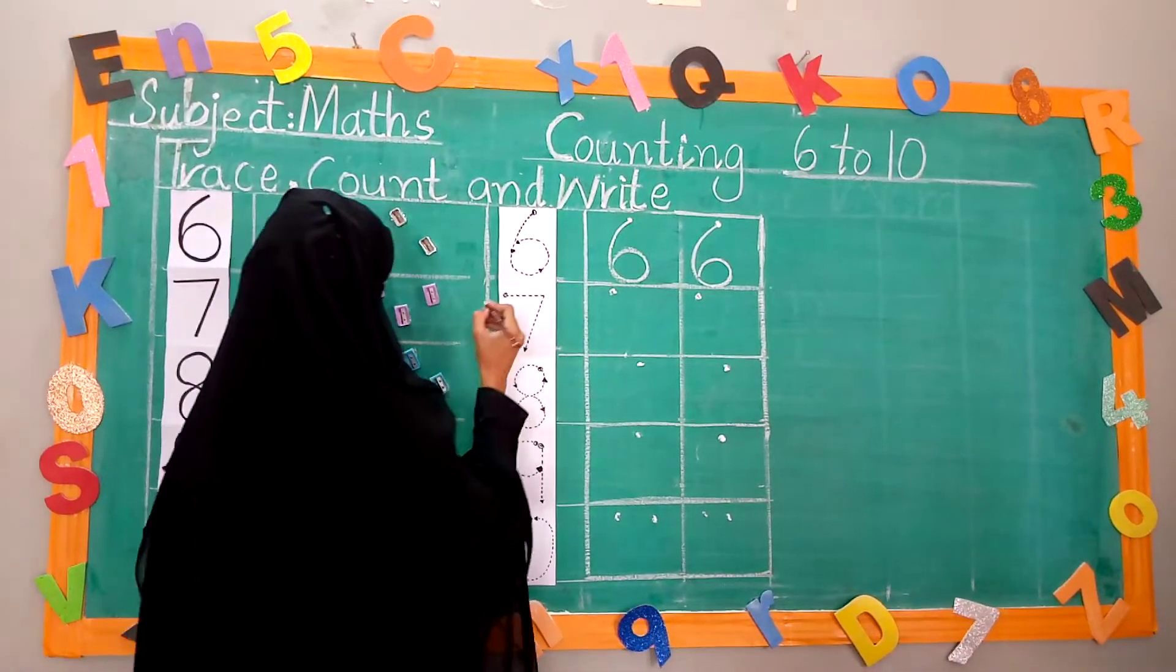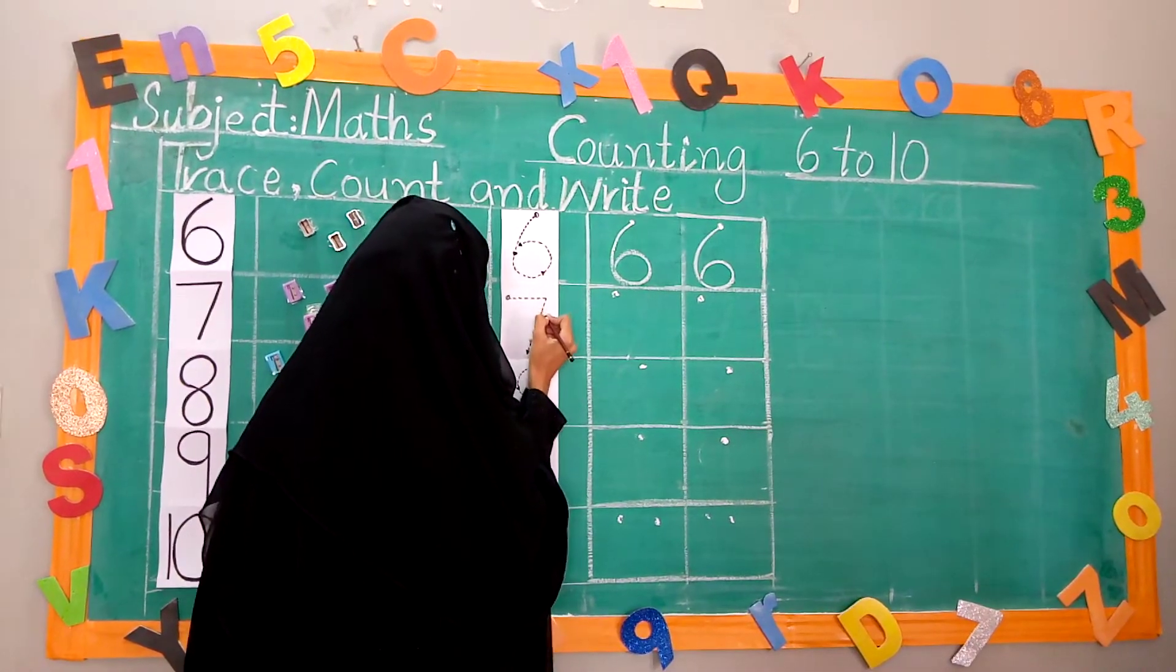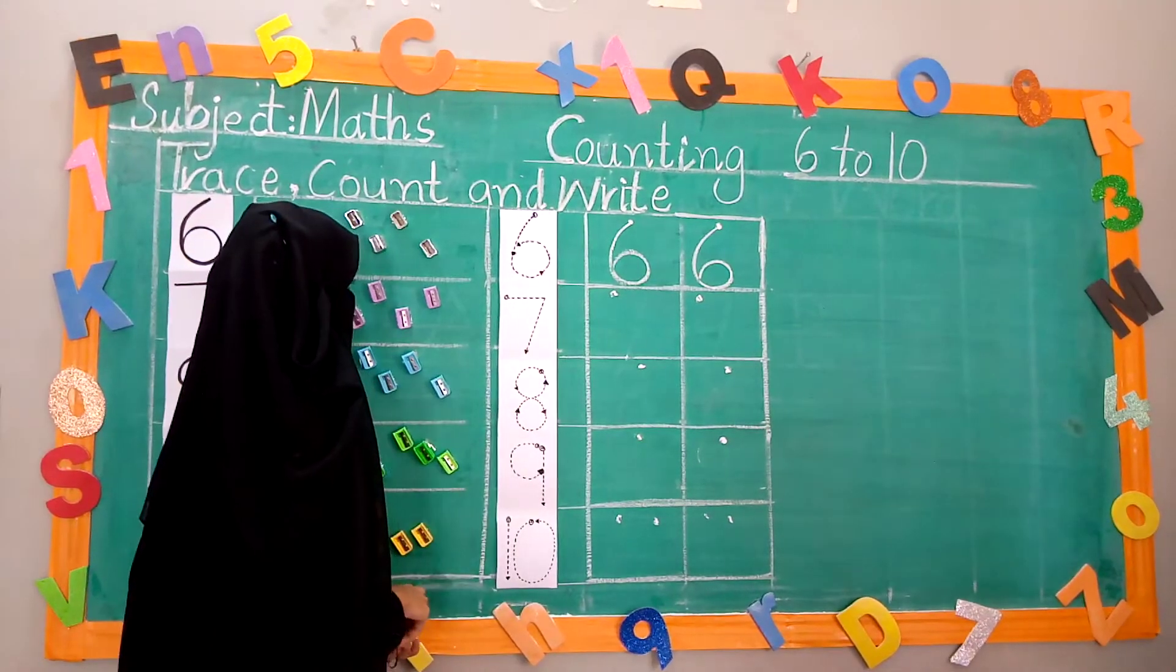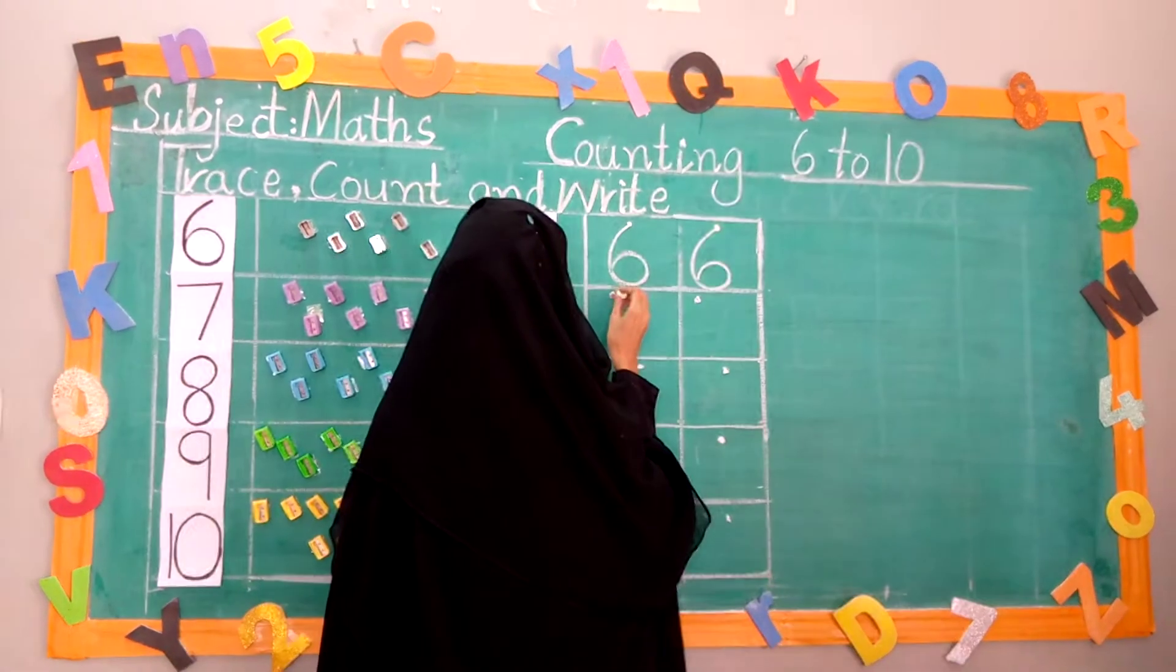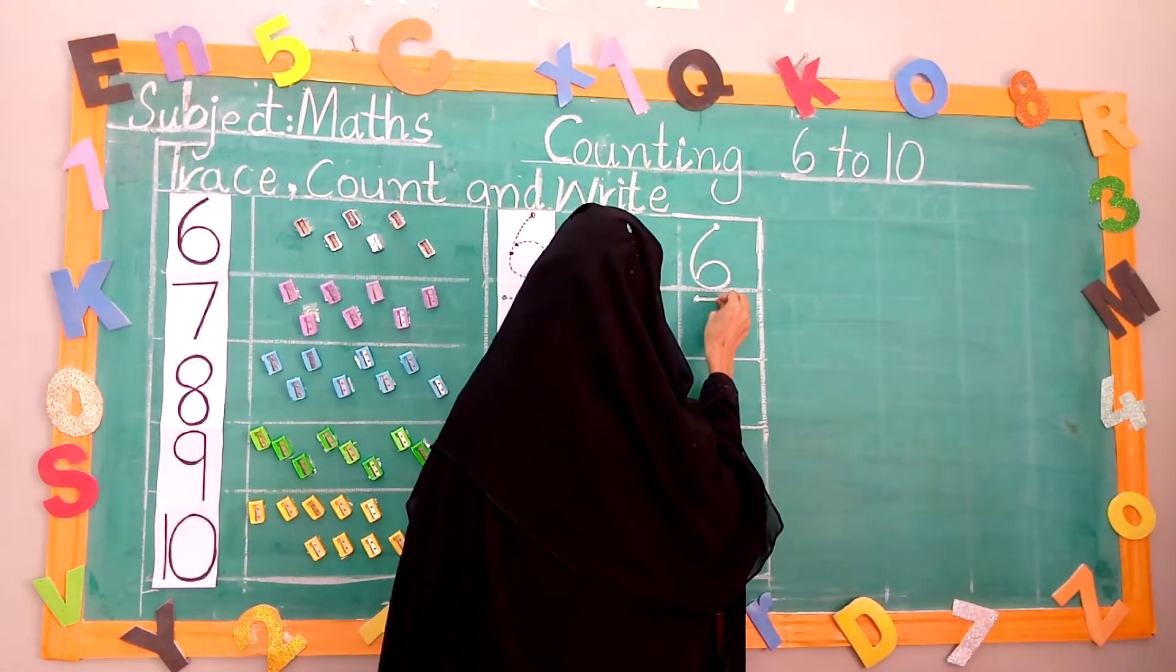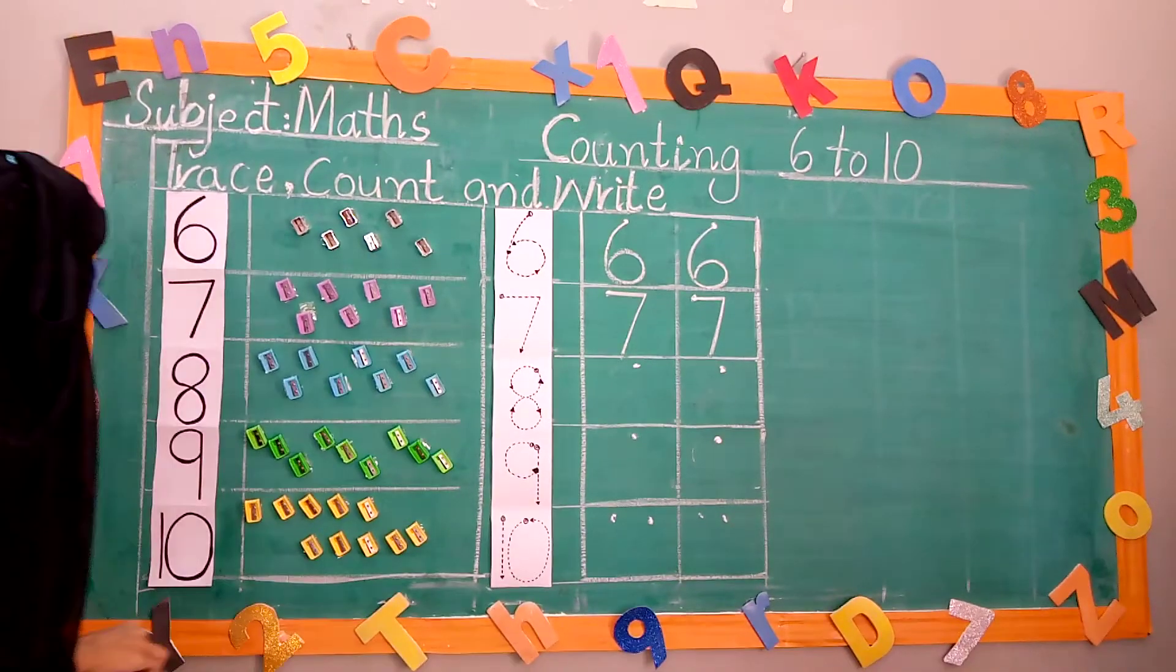Now, trace 7. 7 is look like 7 up. We write 7. Again, we write 7. Touch the down line.